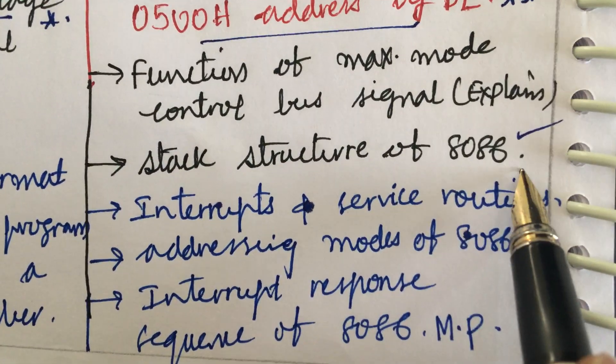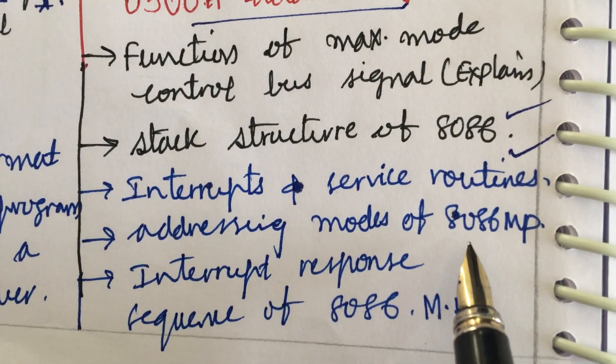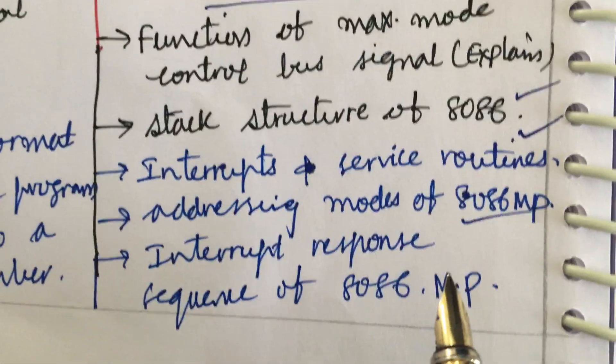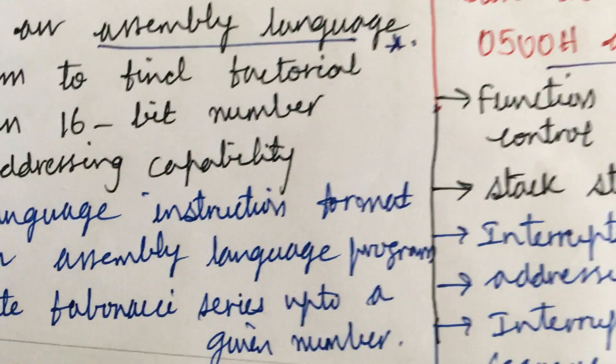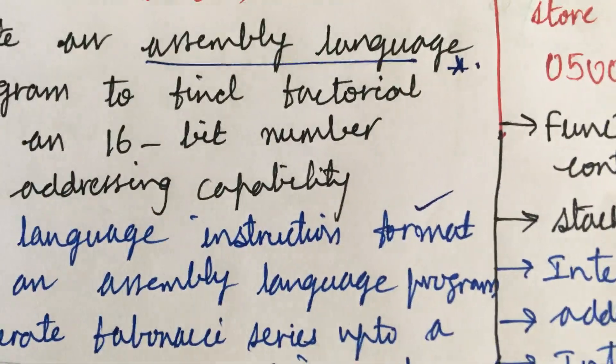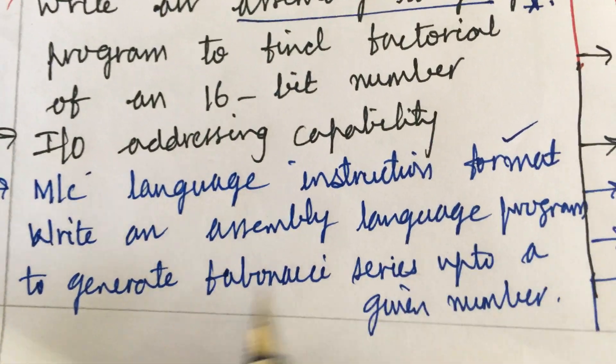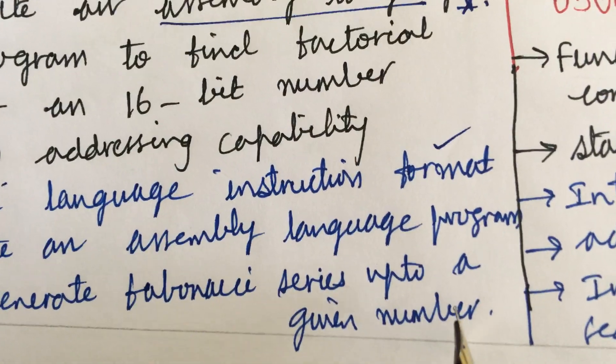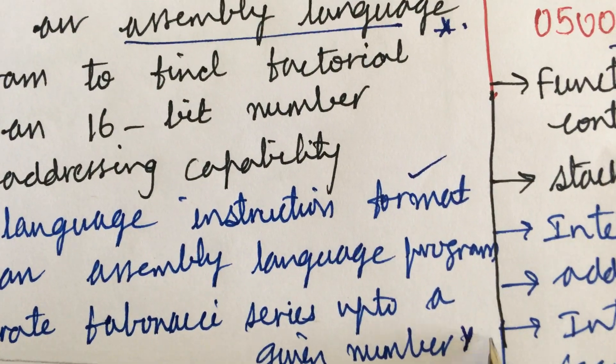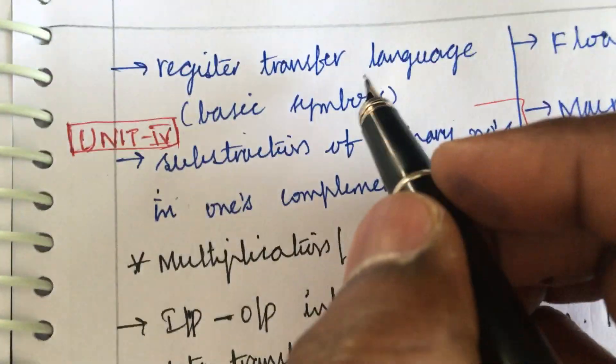Addressing modes of 8086 is also three mark, interrupt response sequence of 8086 may be long and the machine language instruction format the short question. Later write an assembly language program to generate Fibonacci series up to the given number. Such type of programs need to be practiced thoroughly dear students.